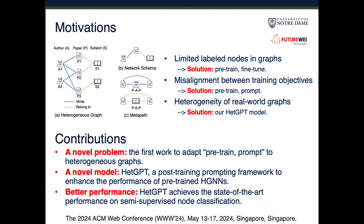The contributions for this work: first, it is the first to adapt the pre-train prompt framework to heterogeneous graphs. Second, we propose HGPT, a general post-training prompting framework to enhance the performance of pre-trained heterogeneous graph neural networks. Finally, it achieves state-of-the-art performance on semi-supervised node classification tasks.